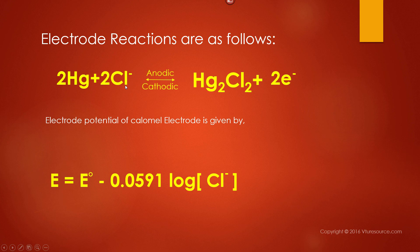If calomel electrode acts as a cathode, then mercurous chloride, that is calomel Hg₂Cl₂, will accept 2 electrons and undergoes reduction to give 2Hg plus 2Cl⁻.